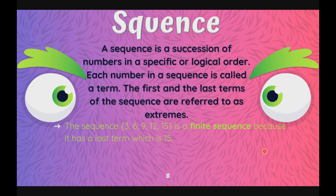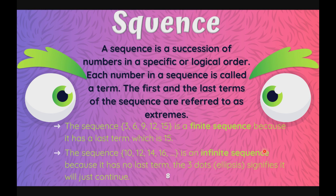So, the sequence 3, 6, 9, 12, 15 is called a finite sequence because it has a last term which is 15. When we say finite, it has a last term. The opposite of that is infinite sequence. We have 10, 12, 14, 16, and so on. This is an example of infinite sequence because it has no last term. We have three dots which is called ellipses, that signifies it will just continue and has no ending.